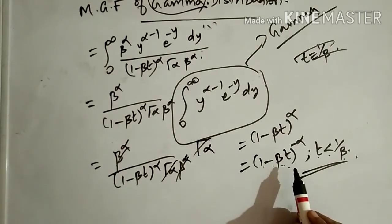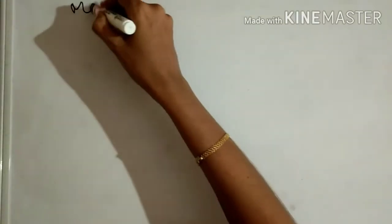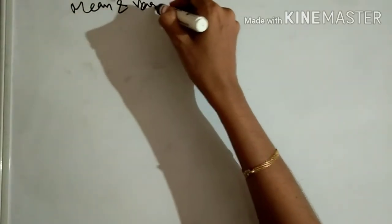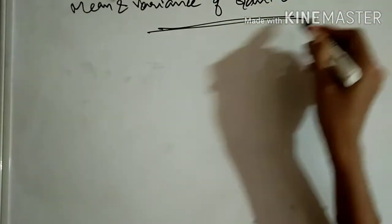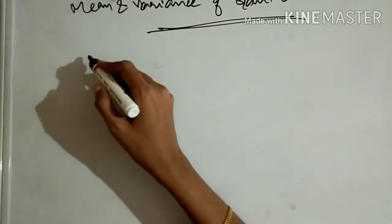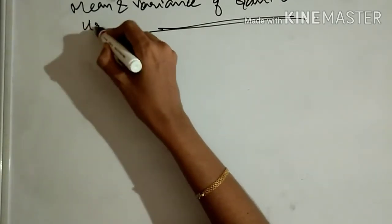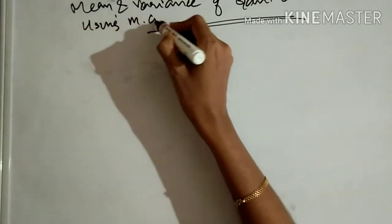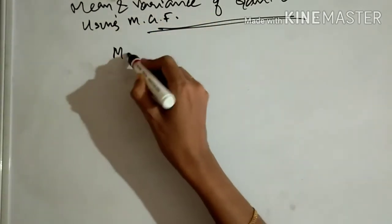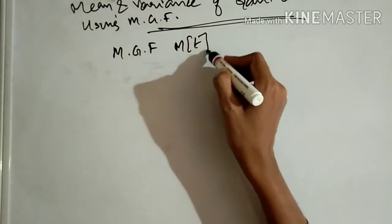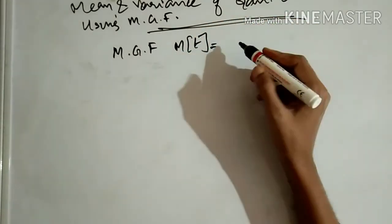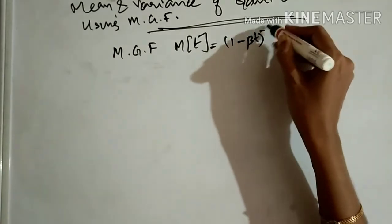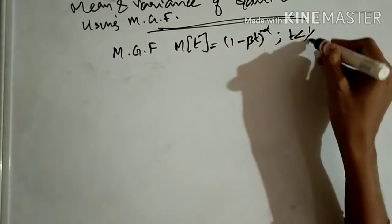Now we find the mean and variance of the gamma distribution using the moment generating function. We know M(t) = (1 - βt)^(-α) with t < 1/β.